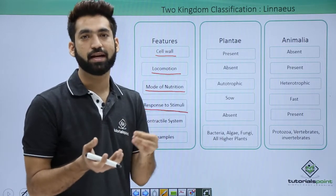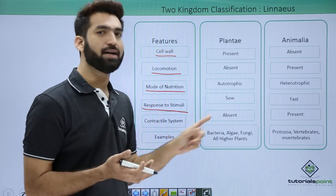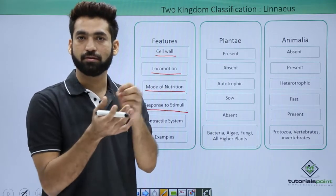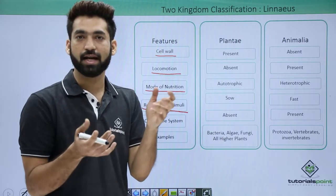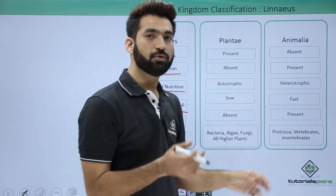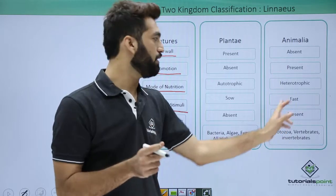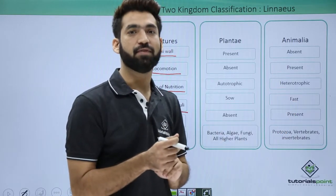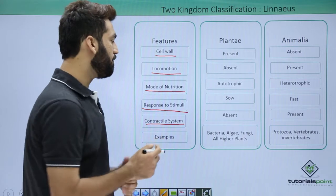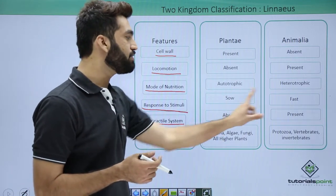Regarding response to stimuli, in plants the response is very slow — for example, the growth of a plant toward sunlight is a slow response. But in animals, if something pinches you, you remove your hand suddenly — that is a very fast response to stimuli.